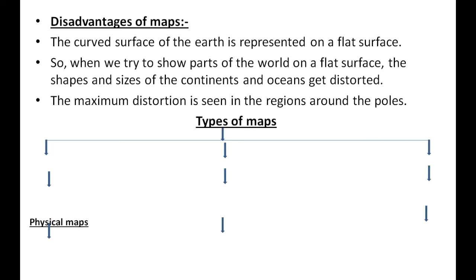Types of maps: There are three types of maps. First is the physical map. Physical maps show the natural features on the Earth's surface, for example, mountains, plateaus, plains, rivers, and so on.